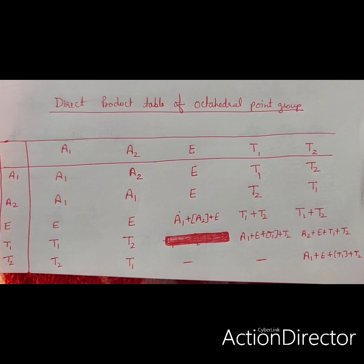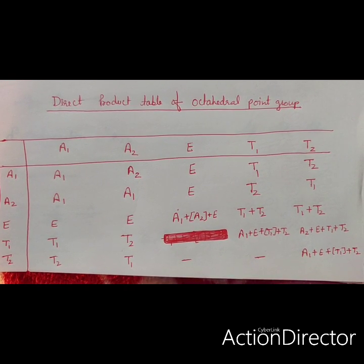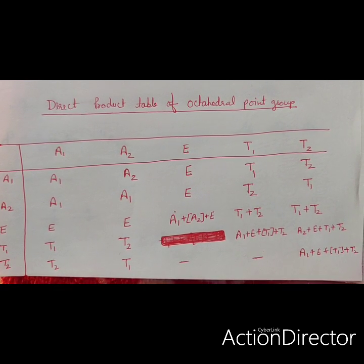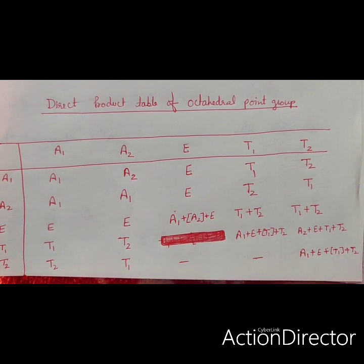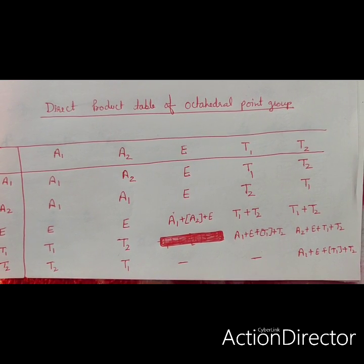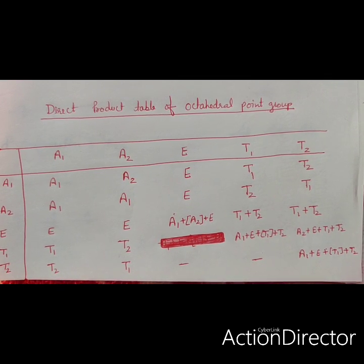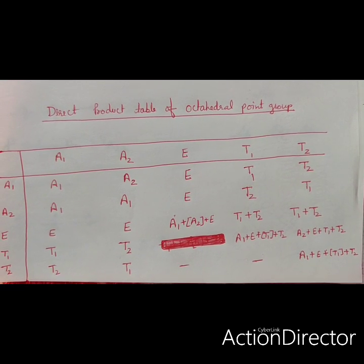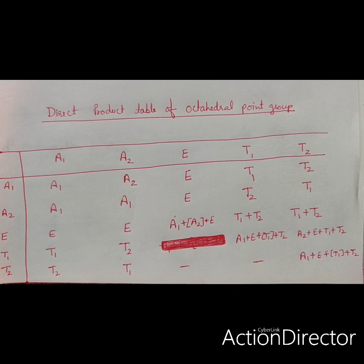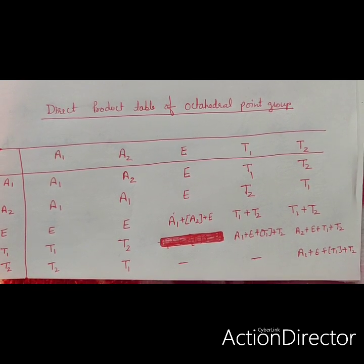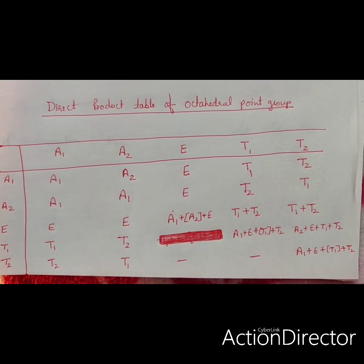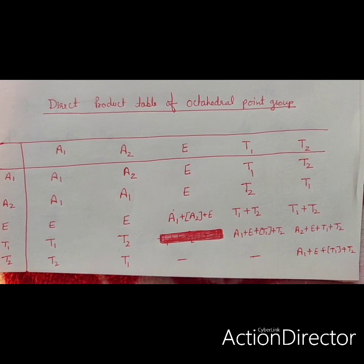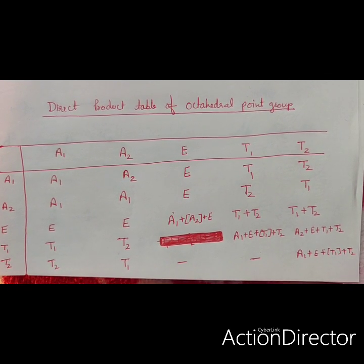To find out the ground state terms for transition metal complexes, we first have to study the direct product table of octahedral point groups. The Tanabe-Sugano diagrams are very useful for octahedral complexes because there are two types: weak field as well as strong field complexes. These terms are generally derived from group theory, so symmetry and group theory arguments are helpful in determining the ground state term of octahedral transition metal complexes.